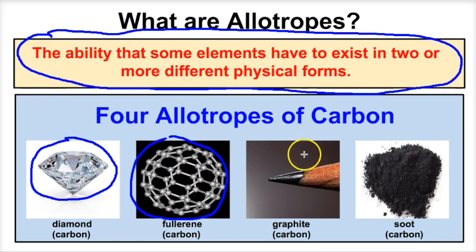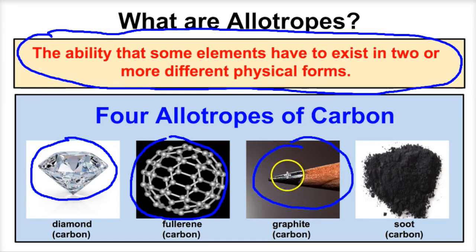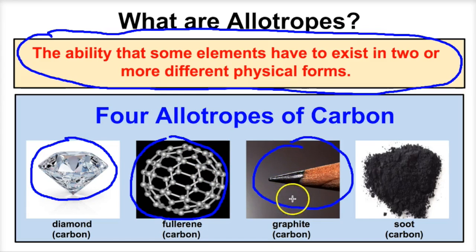The pencil lead in your pencil is not really lead — in fact, it's carbon as well, and it's carbon in a third type or form of allotrope. Graphite is a third allotrope of carbon. Once again, it's carbon just like diamond and fullerene — it's the exact same stuff chemically, just with those carbon atoms rearranged into different geometric patterns.